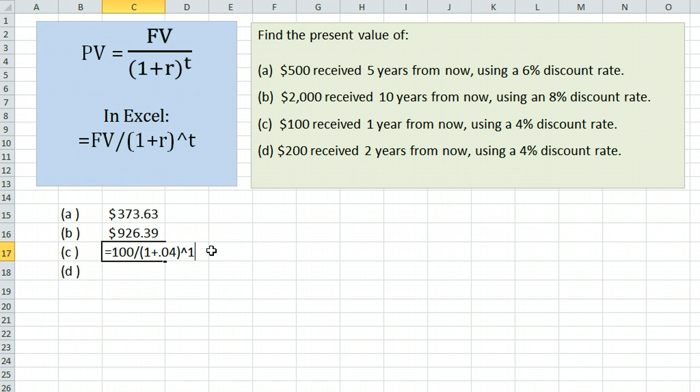The reason I wanted to do this example is just to show that when it is one year from now, you actually do not need the exponent at all. However, it doesn't change anything if you do have it. 96.15 is the value of $100 received one year from now if the discount rate is 4%.